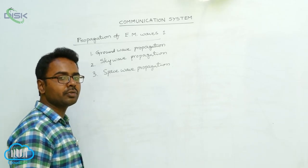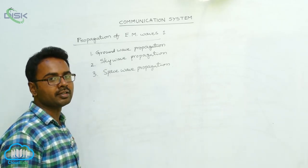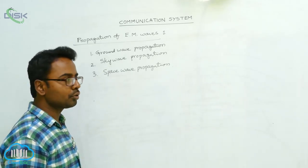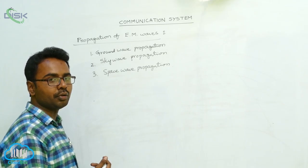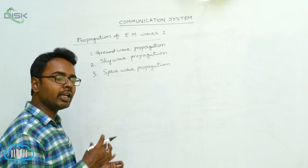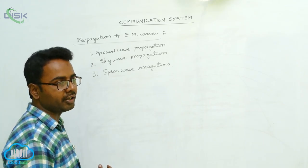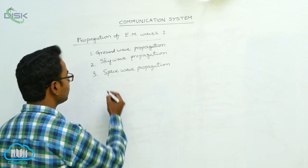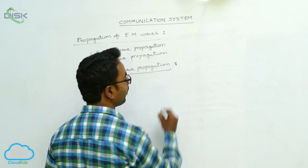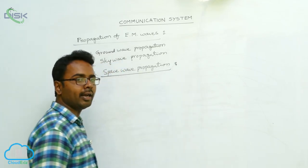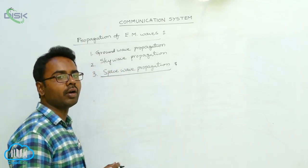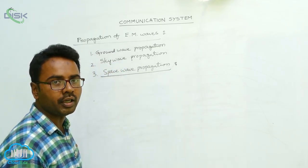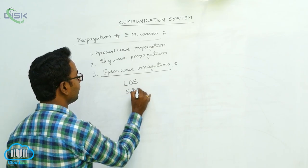Space waves always propagate in straight lines. That is the reason why space waves are used in line-of-sight (LOS) communication as well as satellite communication.